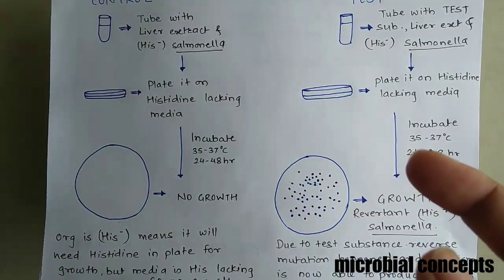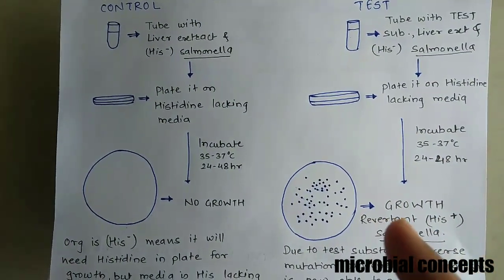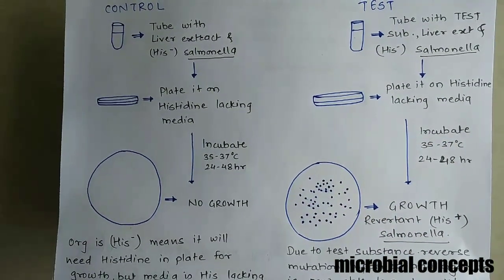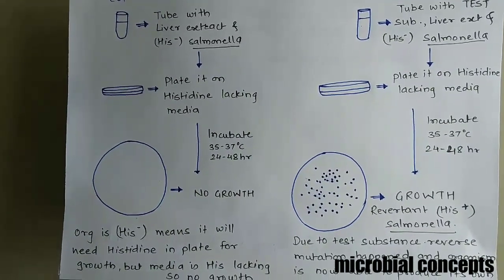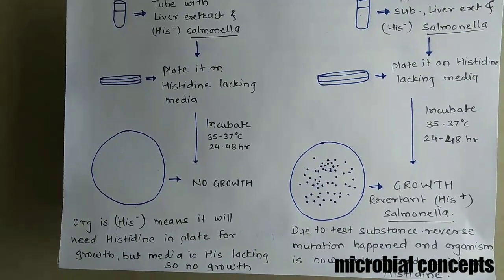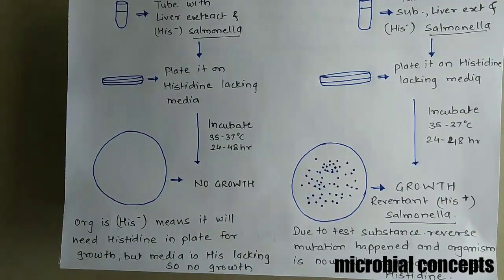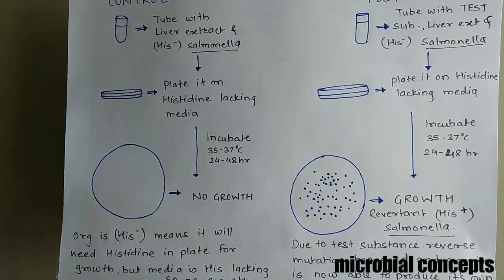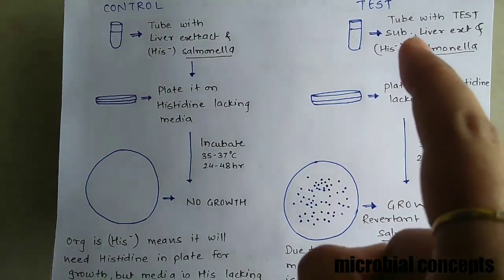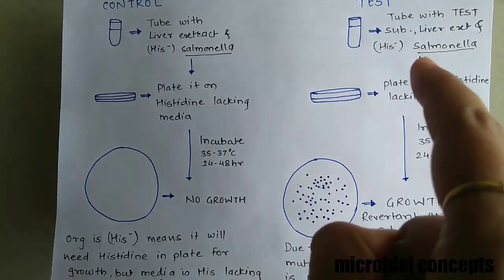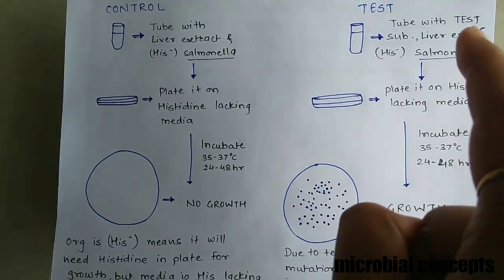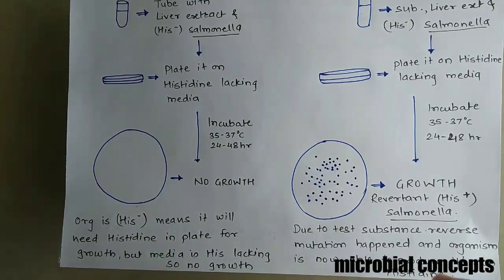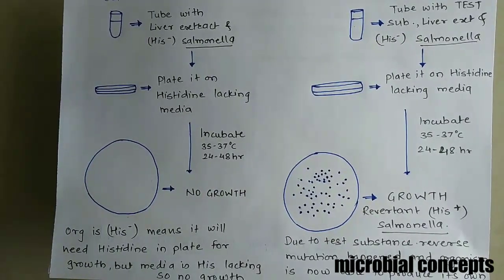After incubating the plate, if you see some colonies, you can conclude that your test substance is mutagenic. The growth is observed because the test substance caused a reverse mutation in the organism, and now the organism is able to produce its own histidine. Remember, the Salmonella used is histidine-negative — it cannot produce histidine — but due to the test substance, it has regained the property of producing its own histidine.